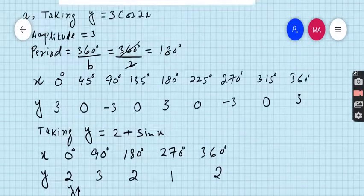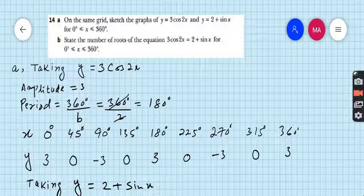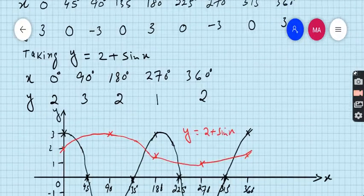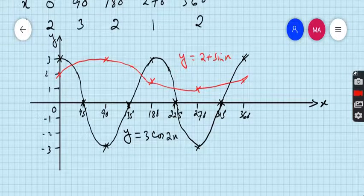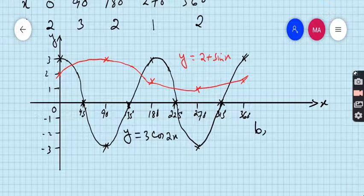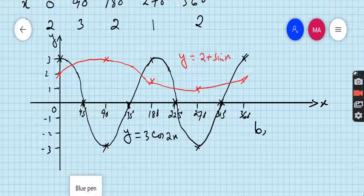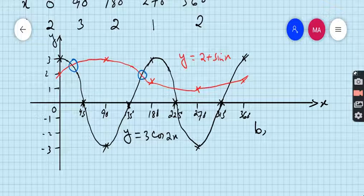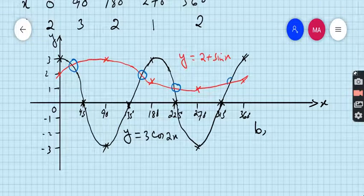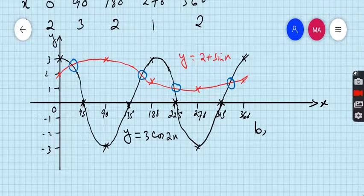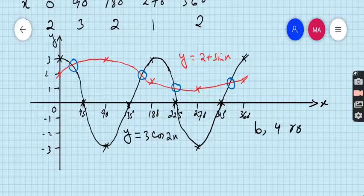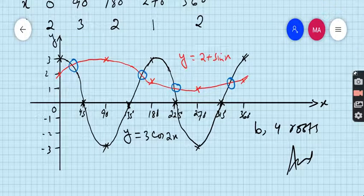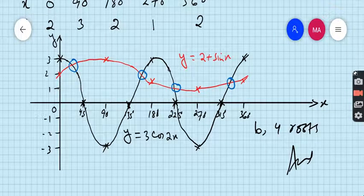What is the requirement of part b? Part a has done. Part b is state the number of roots of the equation 3cos2x plus 2sinx. So if you see carefully, both the curves cross at this point 1, this point 2, this point 3, and this point 4. So there are 4 roots. This is the answer. The value of the roots are not required, but only shows how many points where two curves cross each other.